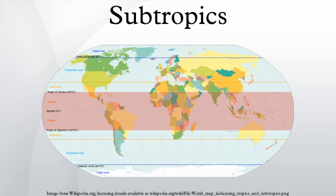Eight months of the year within the subtropics have an average temperature at or above 10 degrees Celsius, with their coldest month averaging between 2 and 13 degrees Celsius. A great portion of the world's deserts are located within the subtropics, due to the development of the subtropical ridge.